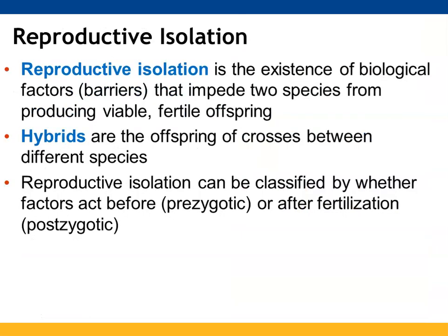Reproductive isolation refers to biological barriers that prevent two species from being able to successfully produce viable fertile offspring. Hybrids are the offspring produced from different species mating with one another. You can have reproductive isolation both before and after fertilization — beforehand is prezygotic, afterwards is postzygotic.